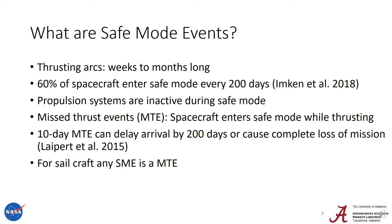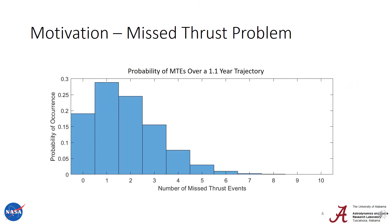Even a 10-day missed thrust event can delay arrival by 200 days or even cause the complete loss of mission. For always-on propulsion methods like solar sails, any safe mode event is a missed thrust event, so you'll hear me use them interchangeably. If we look at a 1.1-year trajectory where the thruster is on for the entirety of the trajectory, we can see the number of missed thrust events against their probability of occurrence. Note that the probability of 1 or 2 missed thrust events is greater than the probability of 0 missed thrust events.